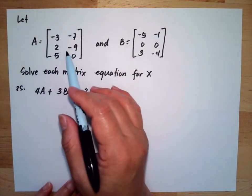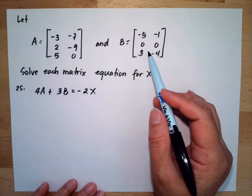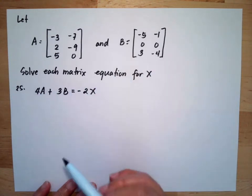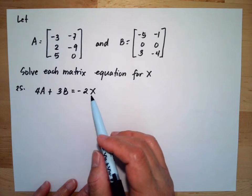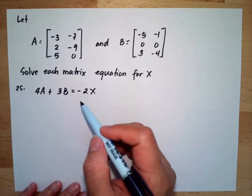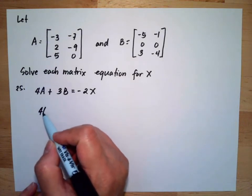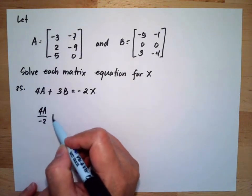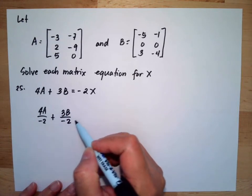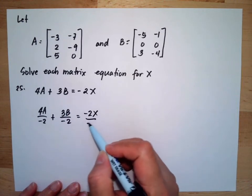Let A equal this matrix and B equal this matrix. Solve the matrix equation for X. To do this, we need to divide both sides by negative 2, so we have 4A over negative 2 plus 3B over negative 2 equals negative 2X over negative 2.